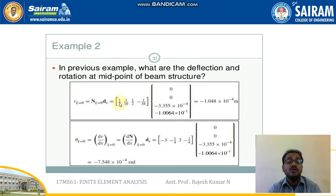These are the simplified values of the shape function equations which we already discussed in the previous videos. If you substitute the equations, we will be getting this thing. We will be getting minus 1.048 into 10 power minus 4 meter for the v case. Similarly for the theta, how we have written for v, for theta it is dv by dx, so dn by dx.